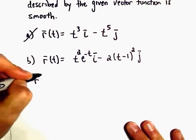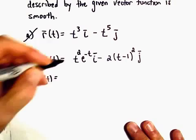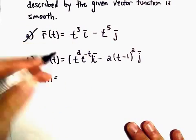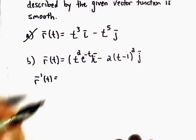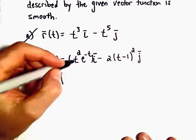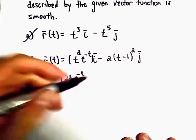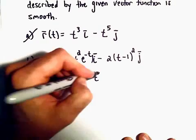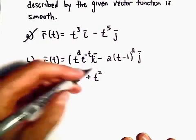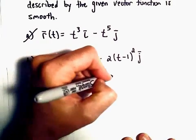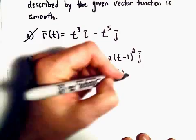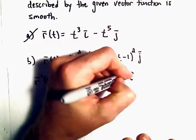The first thing I'm going to do is take our derivative. So for the t squared times e to the negative t, I'll have to use the product rule. The derivative of t squared is 2t, we can leave e to the negative t alone, plus we'll leave the t squared alone. The derivative of e to the negative t will be negative e to the negative t. So all of that's multiplied by i.